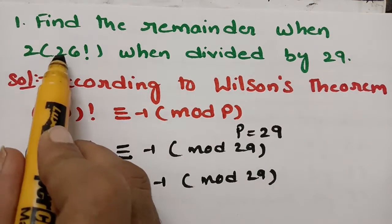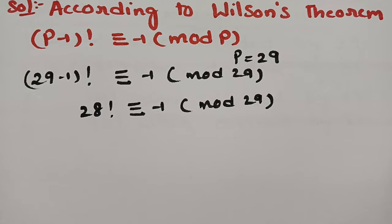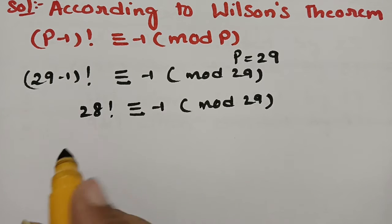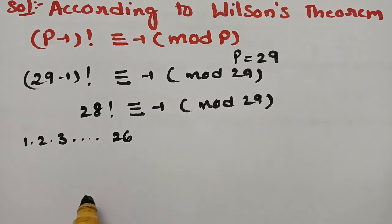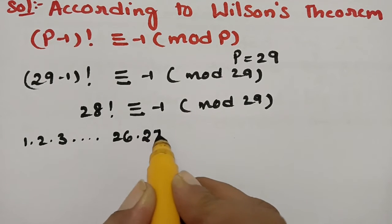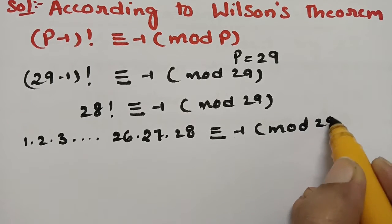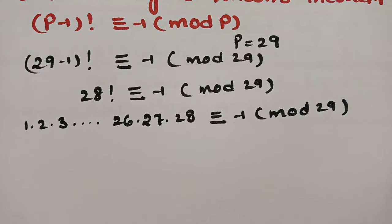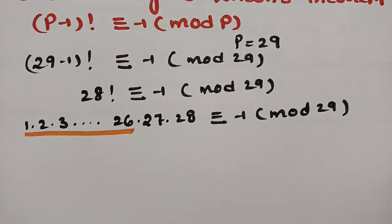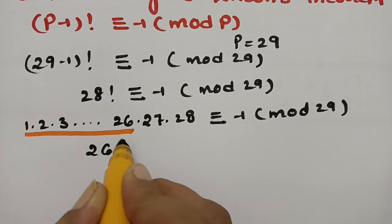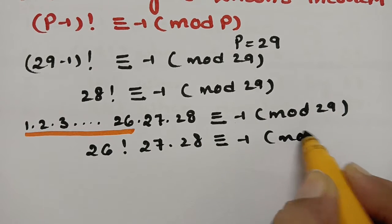According to our question, I need 26!. But we have 28!, so I need to transform 28! into 26!. Since factorial means 1 × 2 × 3 × … , I write up to 26, then 27 and 28 are left. So 28! = 26! × 27 × 28 ≡ −1 (mod 29).